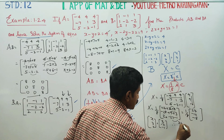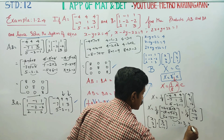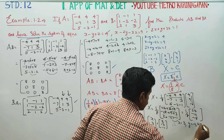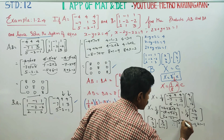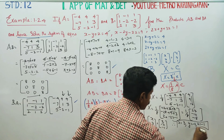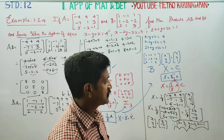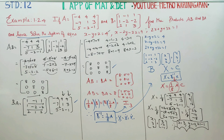Therefore, small x is equal to 3, small y is equal to minus 2, and z is equal to minus 1. This will be the solution for this sum. Okay, thank you.